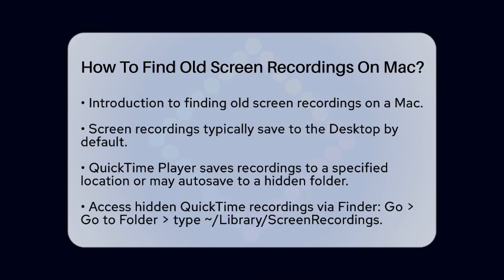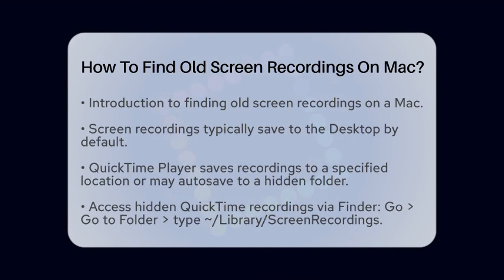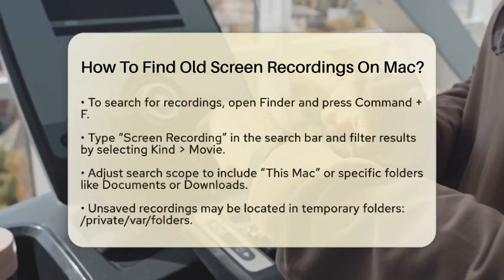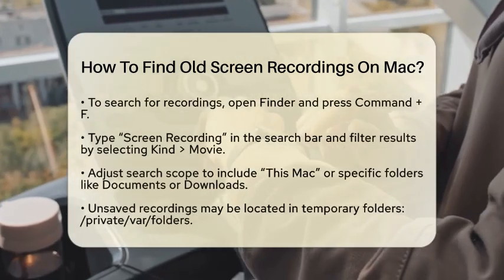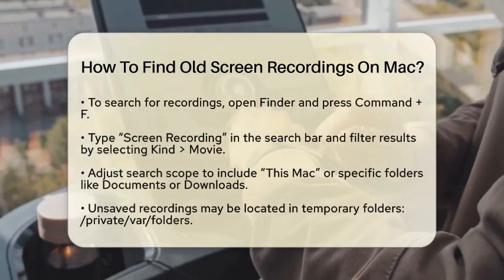You can access this by opening Finder, clicking on Go, and then selecting Go to Folder. Type in the path tilde slash library slash screen recordings and hit Enter. This will take you to the folder where QuickTime might have stored your unsaved recordings.